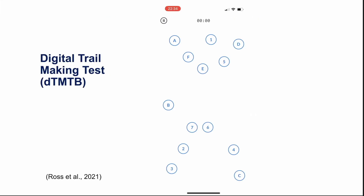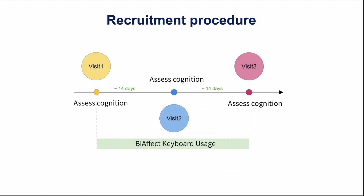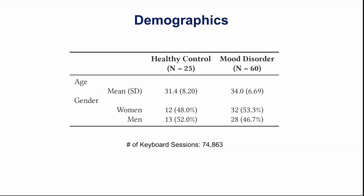In addition to using unobtrusively captured keyboard and accelerometer data, we also included results from the digital trail making test — a reliable active task that measures executive functioning, visual attention, and set switching — into our analysis. To answer our question, participants used the BiAffect keyboard for approximately 28 days. They came into the clinic three times and their cognition was assessed using the digital trail making test at each clinical visit, with visits scheduled 14 days apart. Our sample consists of 85 individuals, 60 of which are individuals with mood disorder, including major depressive disorder and bipolar type 1 and 2. There was no difference in age between the healthy control and mood disorder groups, and within each group the gender split was approximately 50-50. We analyzed over 74,000 keyboard sessions using mixed effects models.